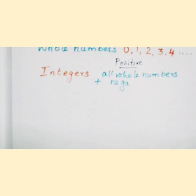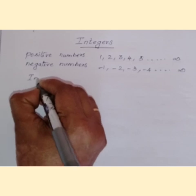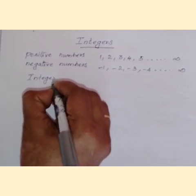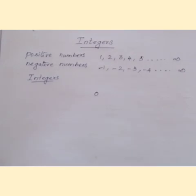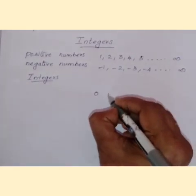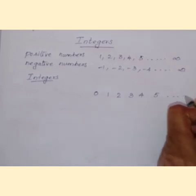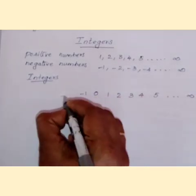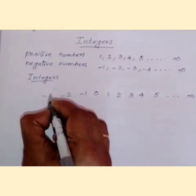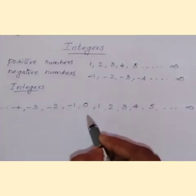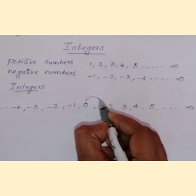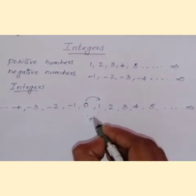Now, let us see how to write these integers. To the right of zero, we write positive numbers: 1, 2, 3, 4, 5, 6, 7, etc. To the left of zero, we write negative numbers: minus 1, minus 2, minus 3, minus 4.